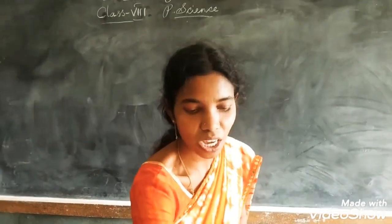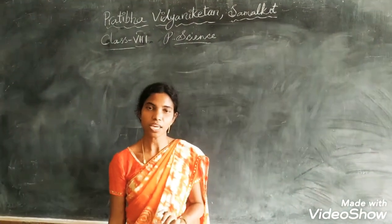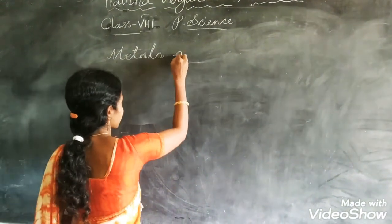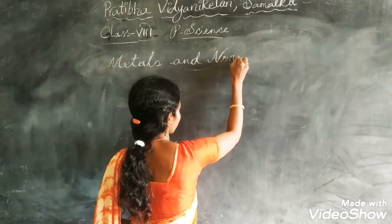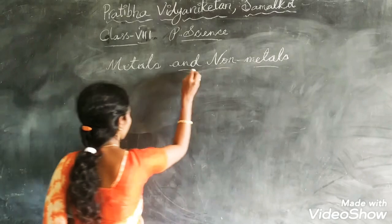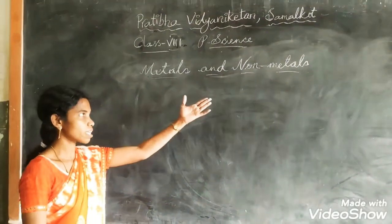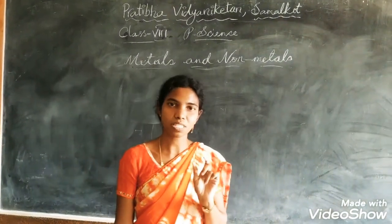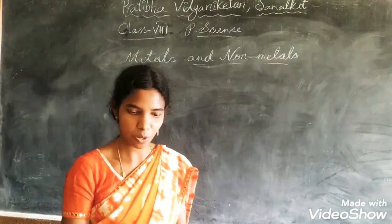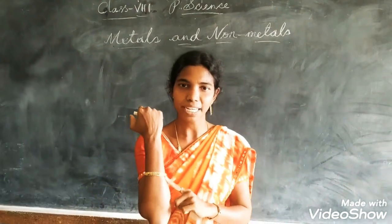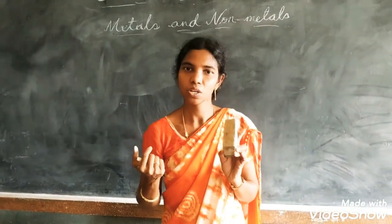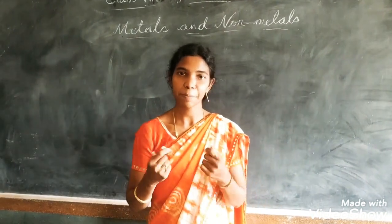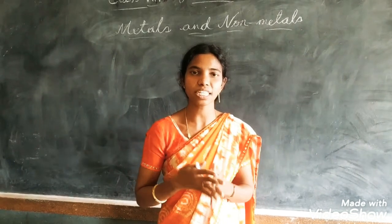In this lesson we are going to learn about metals and non-metals. Non-metals means which are not metals. In metals, they should have some properties. For example, a watch is a metal, but a duster is not a metal because metal has a lustrous property — that means shining property. It can be bent easily. All these properties we will learn in this lesson.